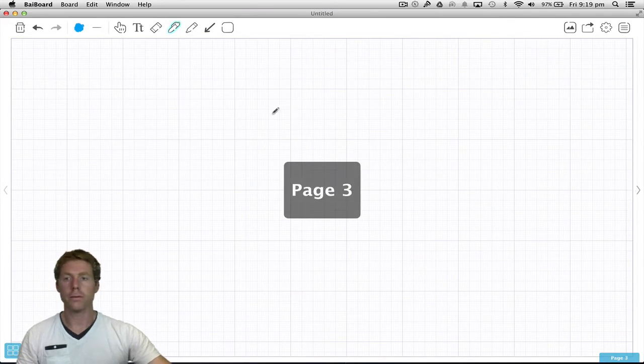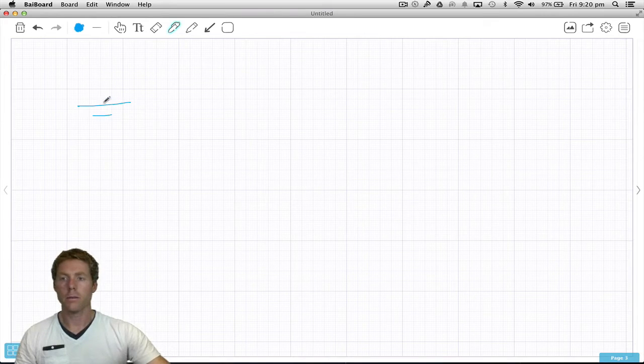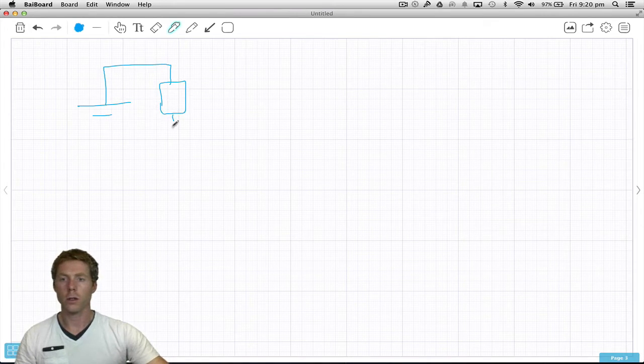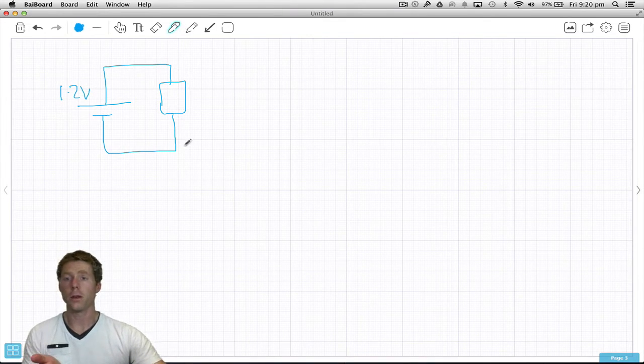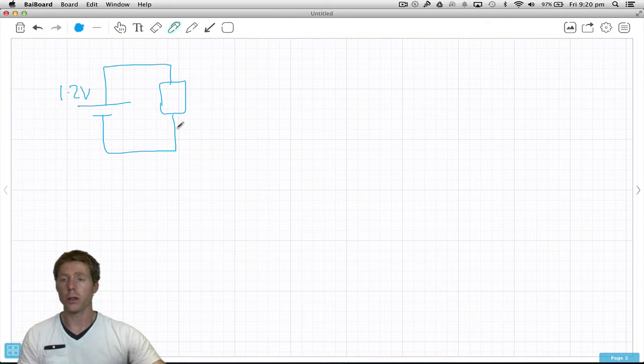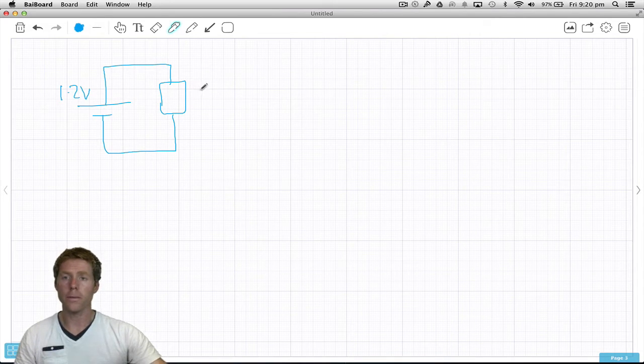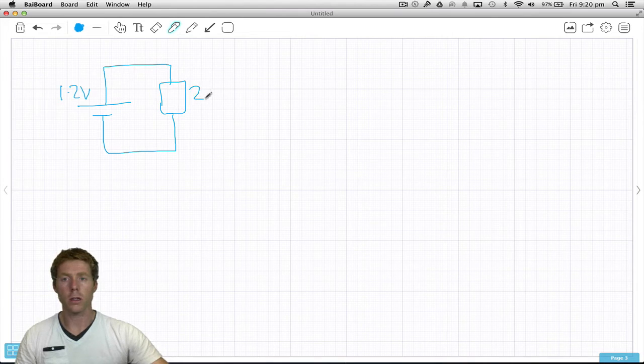How about another example. Here's a circuit, here's a resistor. Let's say we've got 1.2 volts, like a rechargeable AA battery. The resistance is 2.2k ohms.